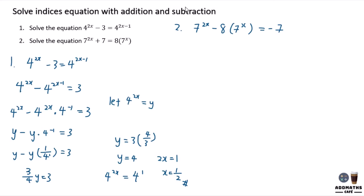We can see that 7^x is repeated more than once. We have 2x and x as powers. Let 7^x = y, so 7^(2x) = y^2.